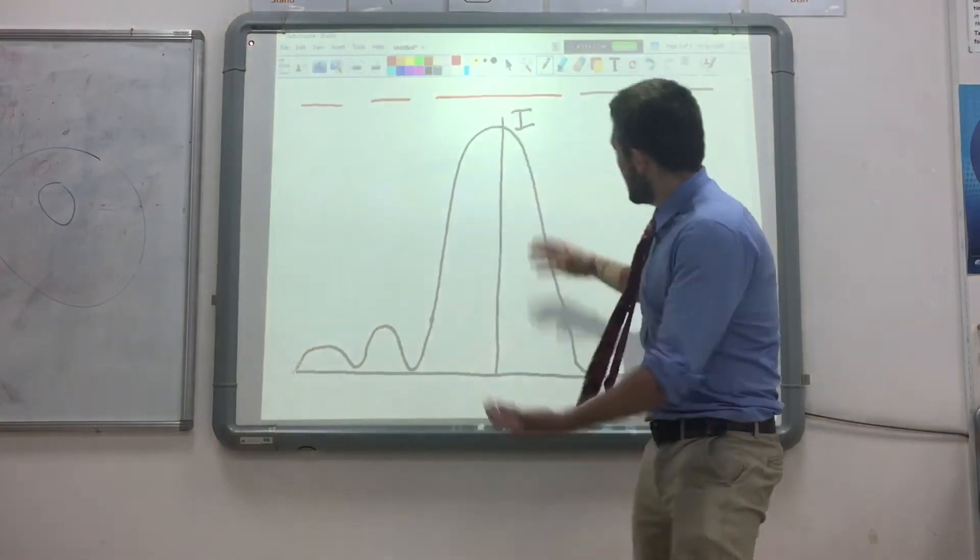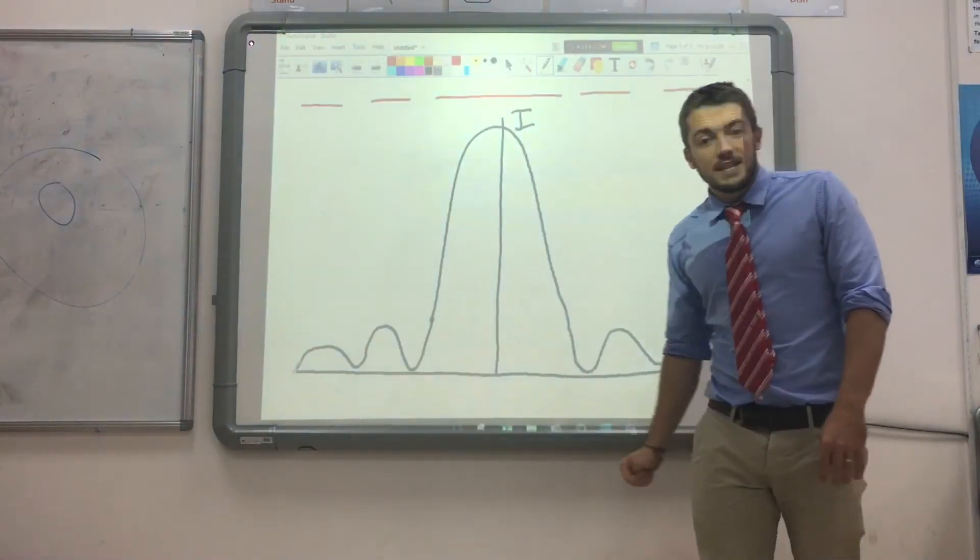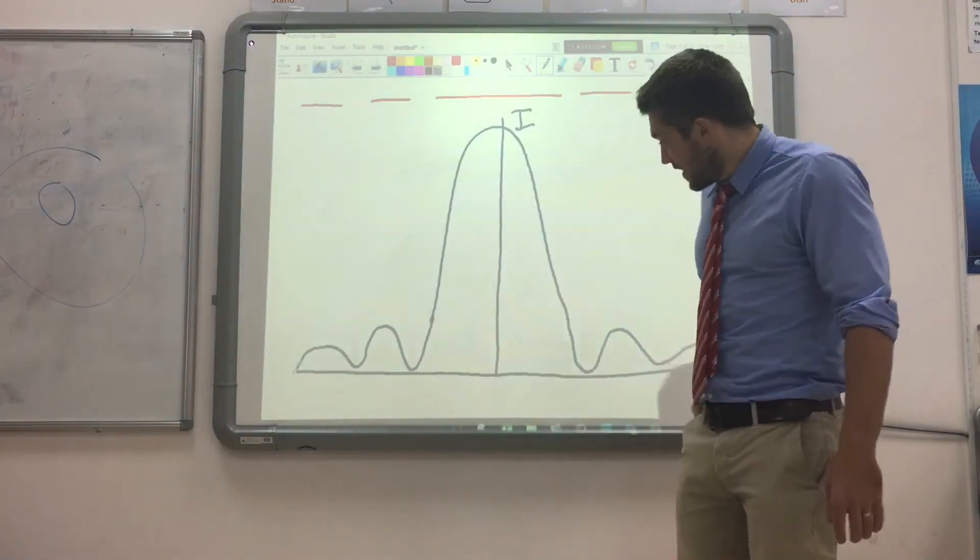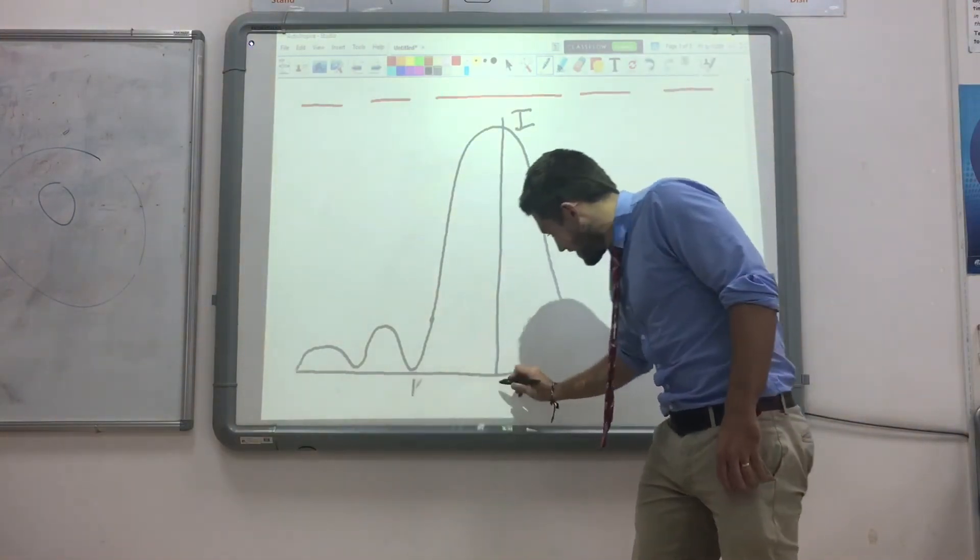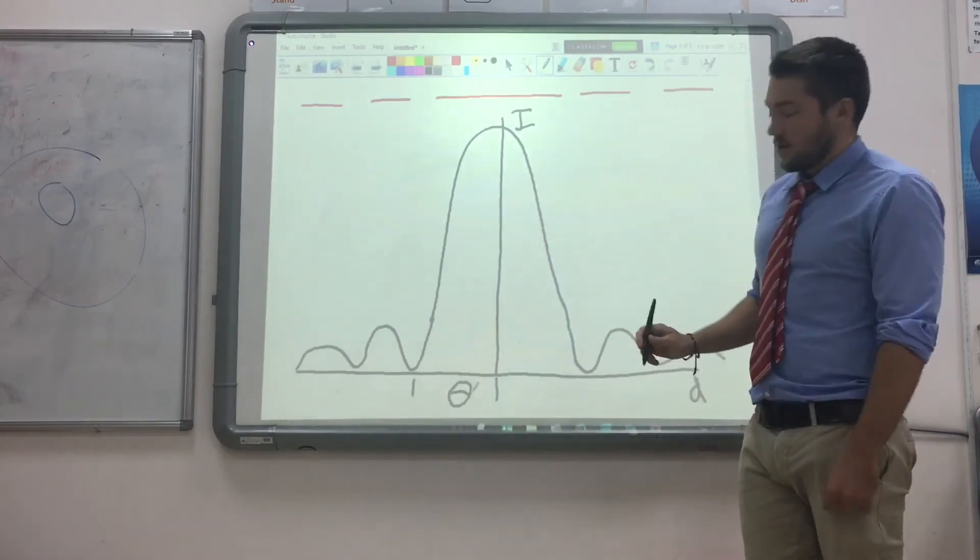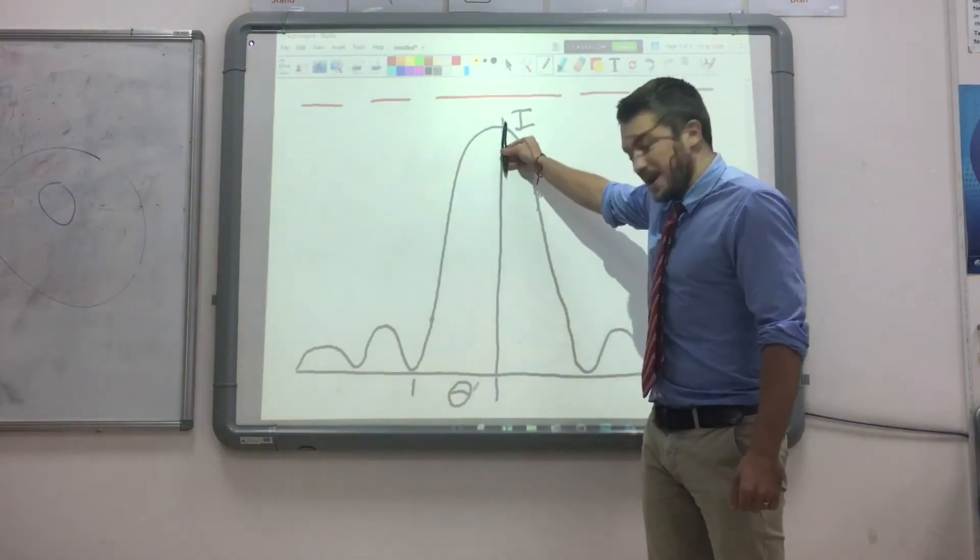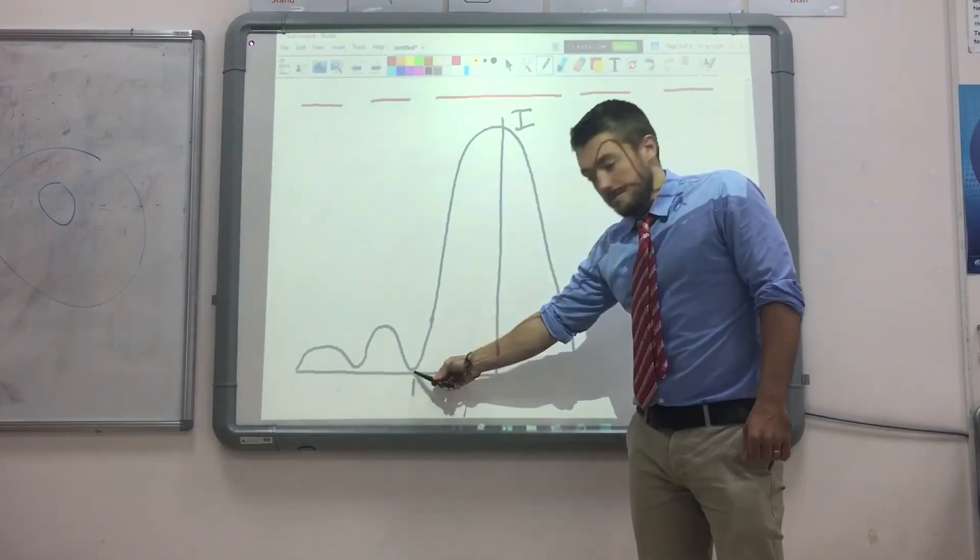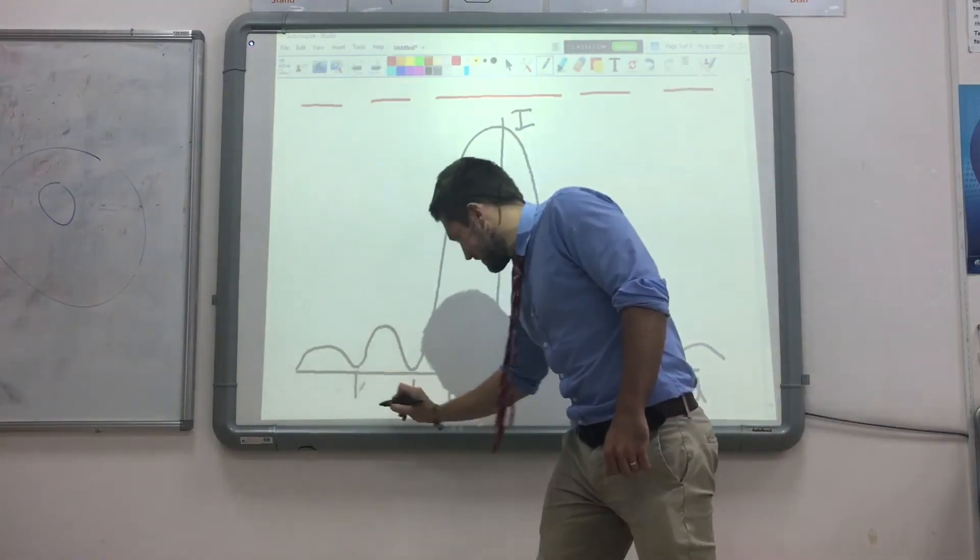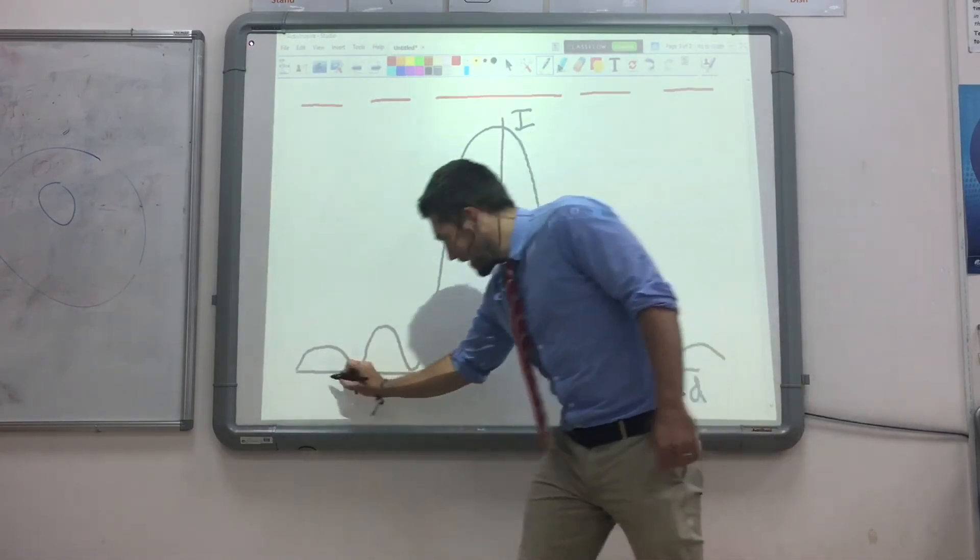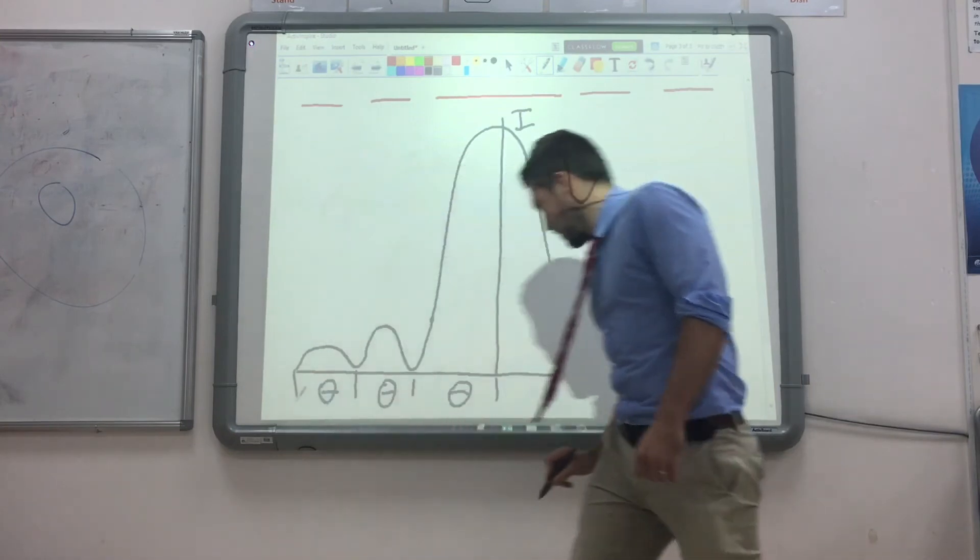Now that is a classic single slit diffraction pattern. The equation we can use tells us the angular separation theta from the peak here - the middle of the peak to the first minimum. And that is the same angular separation as the first minimum to the second minimum and the second minimum to the third minimum.